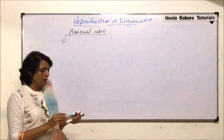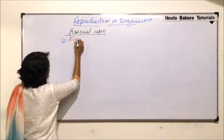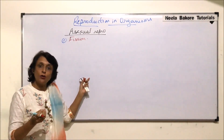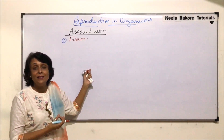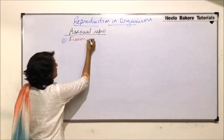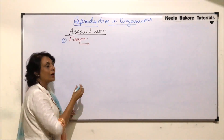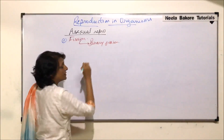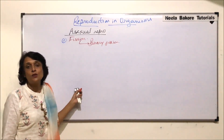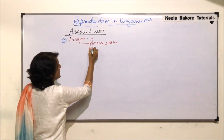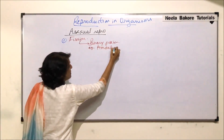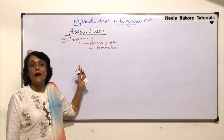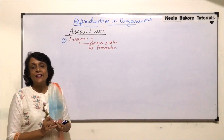The first type of asexual reproduction is fission, which basically means splitting. Depending on how many daughter cells the parent cell splits into, we get two types. One is called binary fission, where one parent cell divides into two daughter cells. This is seen in organisms like amoeba or paramecium.